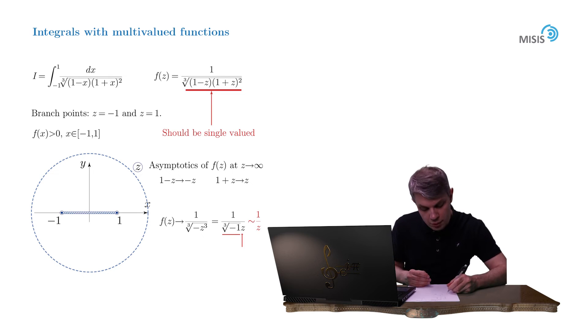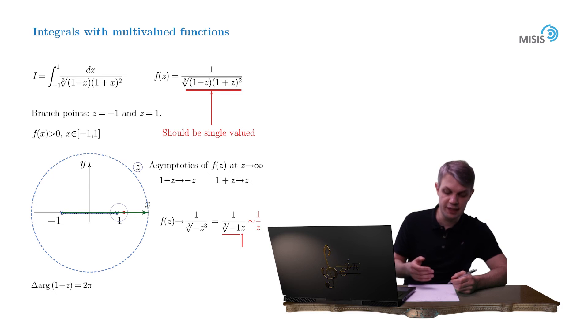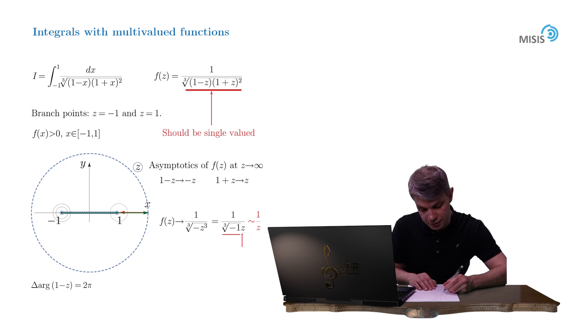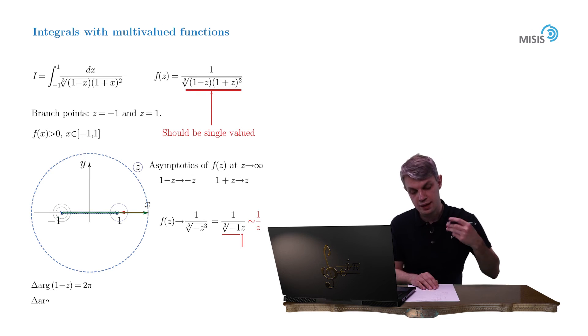The number 1 minus z is represented by the arrow pointing at point 1. And as we clearly see, it makes a full 2π rotation in the counterclockwise direction. The number 1 plus z is represented by the arrow starting at point negative 1. And again, it makes a full 2π rotation in the counterclockwise direction.